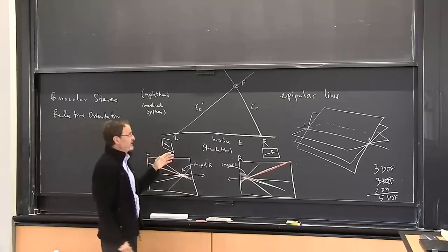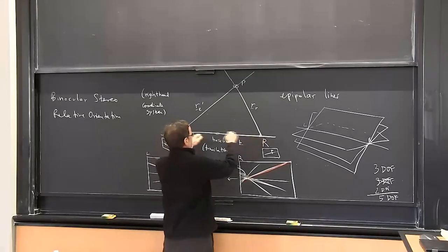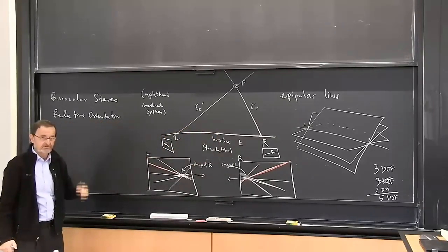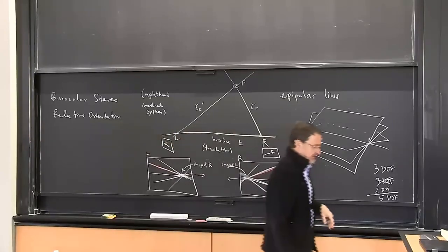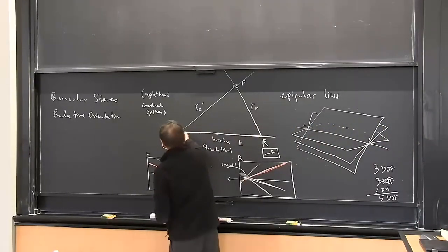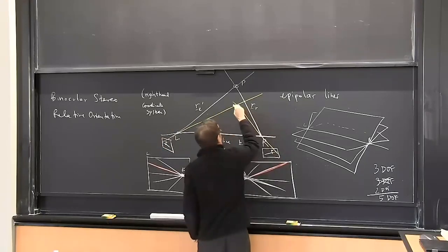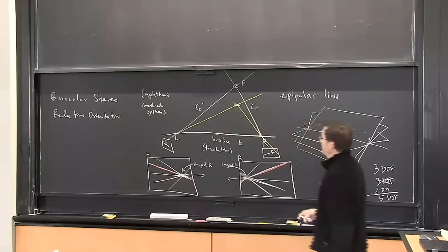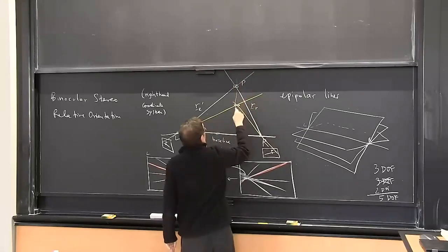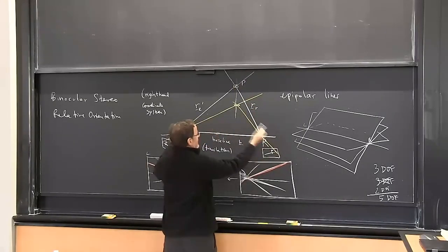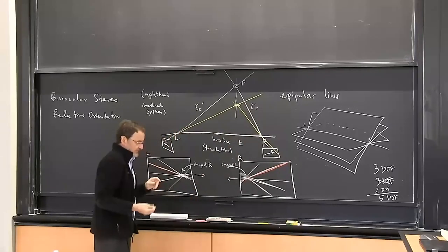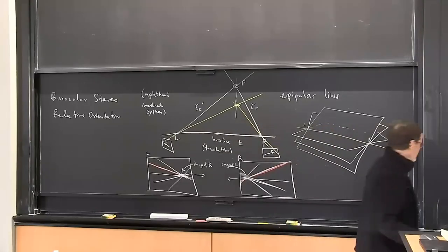It's constrained but only by one degree of freedom. So let's add a second correspondence. That's more constrained, but you can still rotate the right camera and all its wires about the axis through the two image points, and they will still pass through. So that reduces the degrees of freedom but isn't enough. The answer is five correspondences.